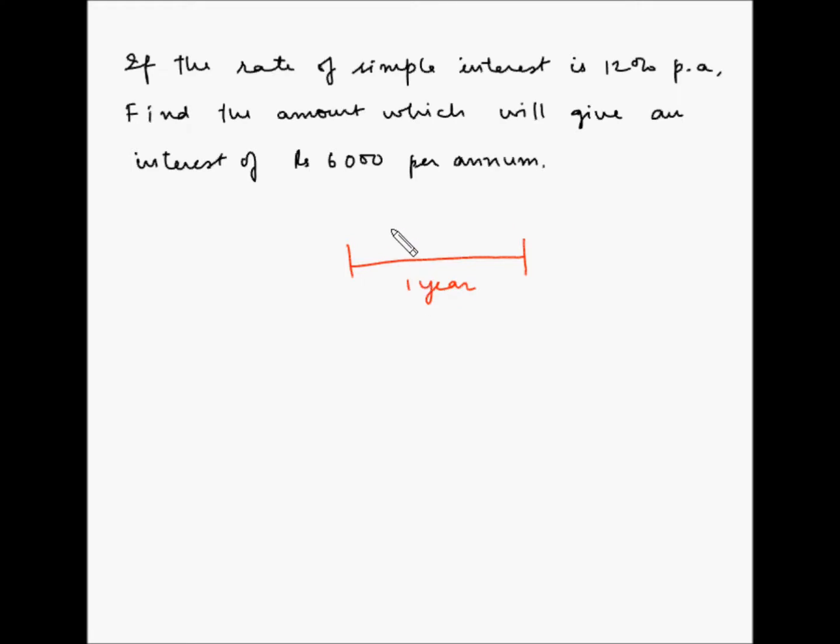The simple interest rate is 12% per annum, and with this rate at the end of one year the simple interest is 6000 rupees. So now we have to find what is the principal amount. Let's use the formula for calculating simple interest.